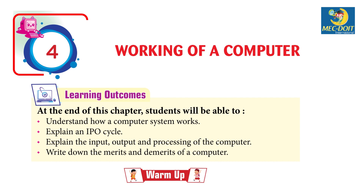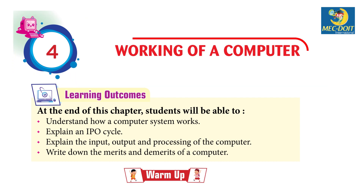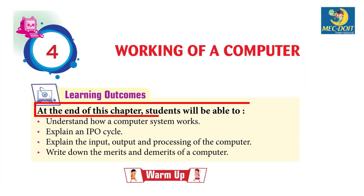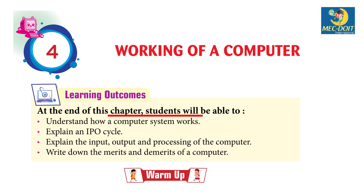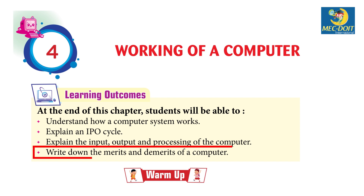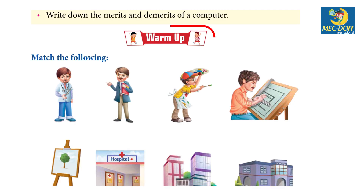Chapter 4: Working of a Computer. Learning Outcomes: At the end of this chapter, students will be able to understand how a computer system works, explain an IPO cycle, explain the input, output and processing of the computer, and write down the merits and demerits of a computer.